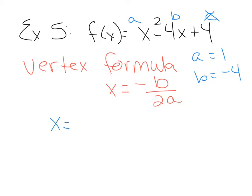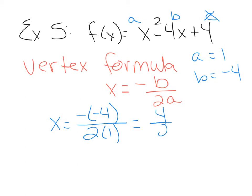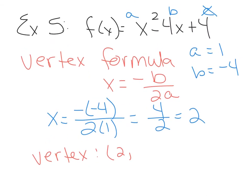Plugging into the formula: negative b will be negative negative 4 — don't be confused, this negative is always there, and since b was negative, we have two negatives together — over 2a, or 2 times 1. So this becomes 4 over 2, which is 2. This is only the x-coordinate of the vertex, so I'm labeling this: the vertex has an x-coordinate of 2.